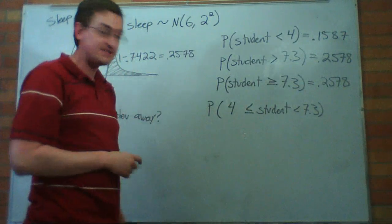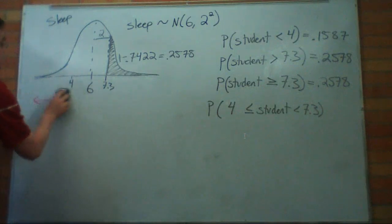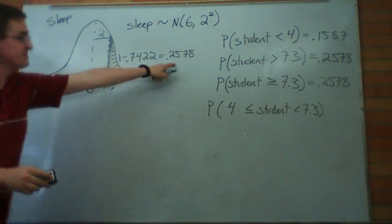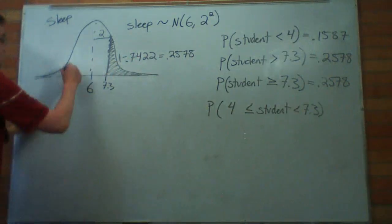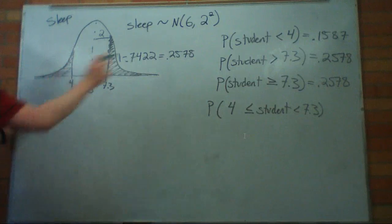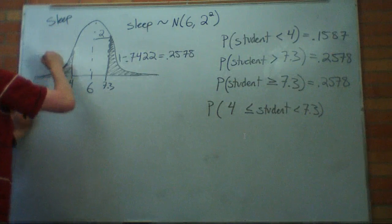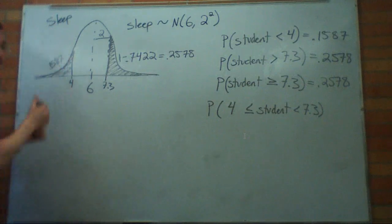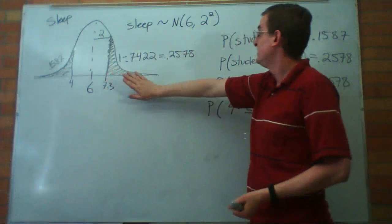So, let's go back to my picture and see what this does. I know this area here is 0.2578. And earlier I calculated the area from 4 and below. And the area there was 0.1587. So, I have 15% here and 25% there. But I want an area in between.